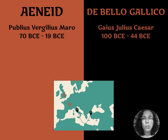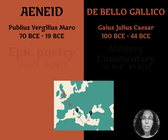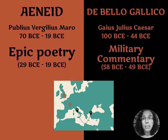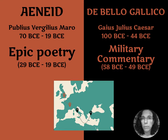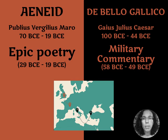The Aeneid was written by Virgil, and he lived from 70 BCE to 19 BCE. De Bello Gallico was written by Julius Caesar. He was born in 100 BCE and died in 44 BCE on the Ides of March. The Aeneid is an example of epic poetry, and it was written from 29 to 19 BCE — in fact, it wasn't finished when Virgil died. De Bello Gallico is a military commentary, kind of dispatches from the front, and it was actually written during the Gallic Wars as they were happening, between 58 BCE and 49 BCE.